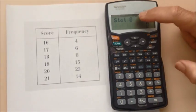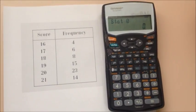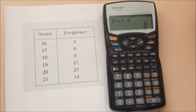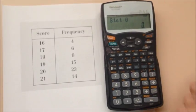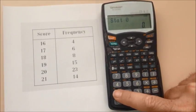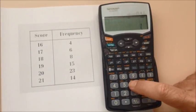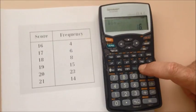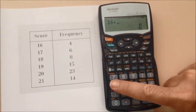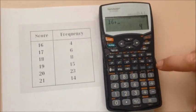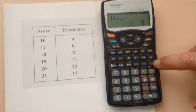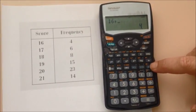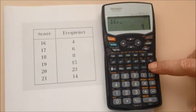It's now in stat mode and now we're going to start putting the data that's on the left hand side in our table. Because the number 16 occurs four times, we type in 16 and press this button which brings up a comma. So 16 occurs four times, and then we hit the M plus button which has a little word underneath, data. So we're actually inputting data.